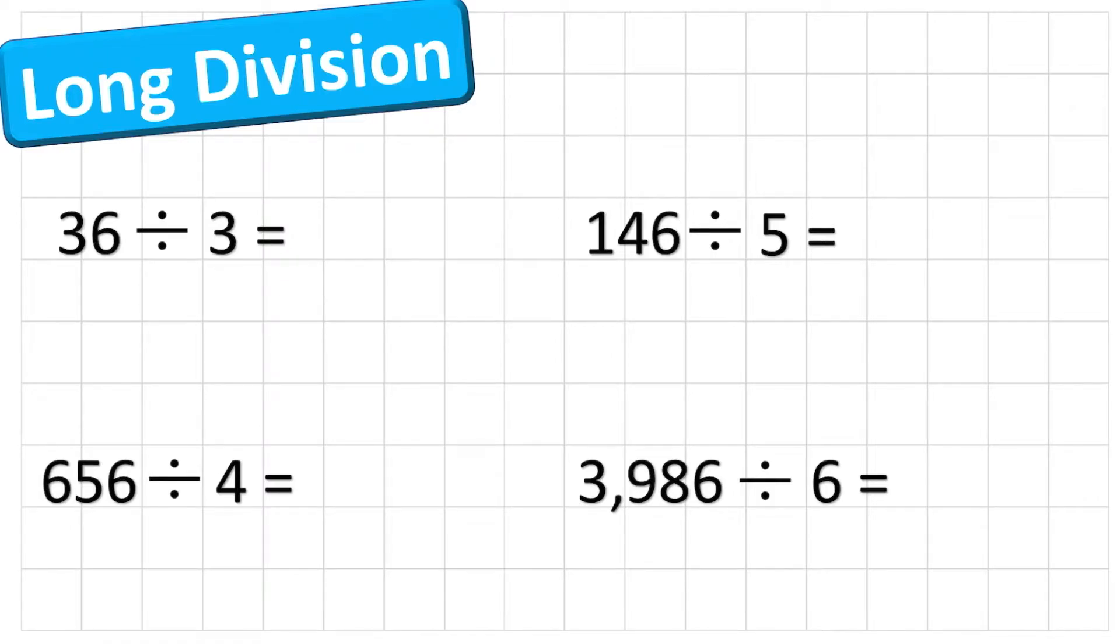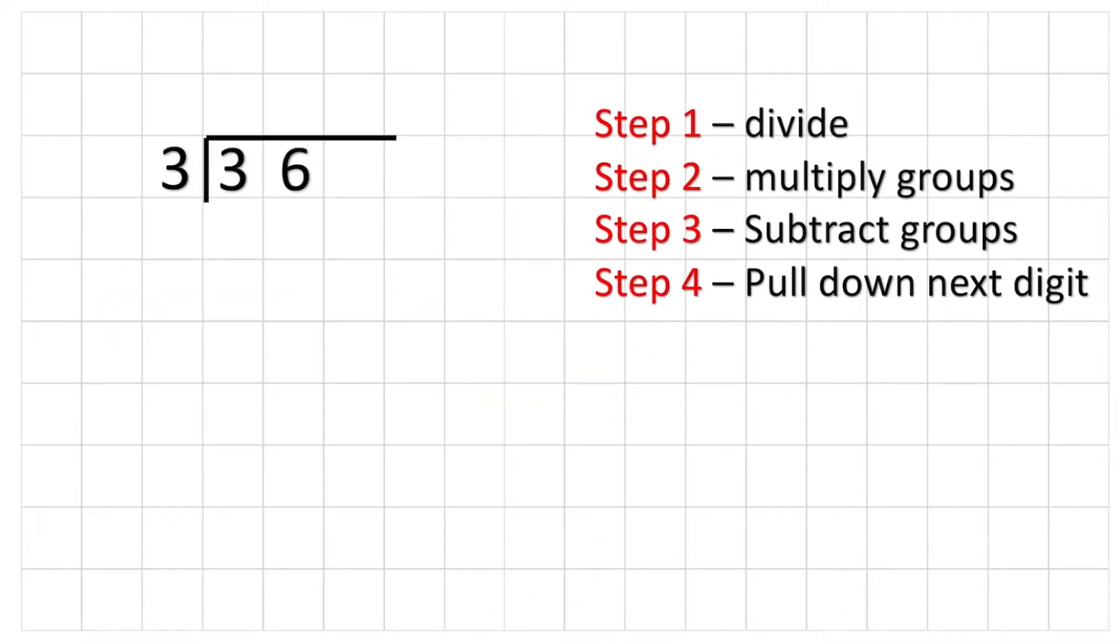We're going to first start with this question here. It says 36 divided by 3. So the first thing that we're going to do is put our 36 inside what we call this bus stop and we'll put the 3 on the outside. We call this 3 the divisor and the 36 we call the dividend. What we're doing here is we are sharing our dividend between our divisor. We need some steps to help us answer this. The first step is going to be to divide, and then we're going to do step 2 which is to multiply and find out how many we took away from our 36 each time. Then we'll subtract that group and then we'll pull down the next digit and work on the next column.